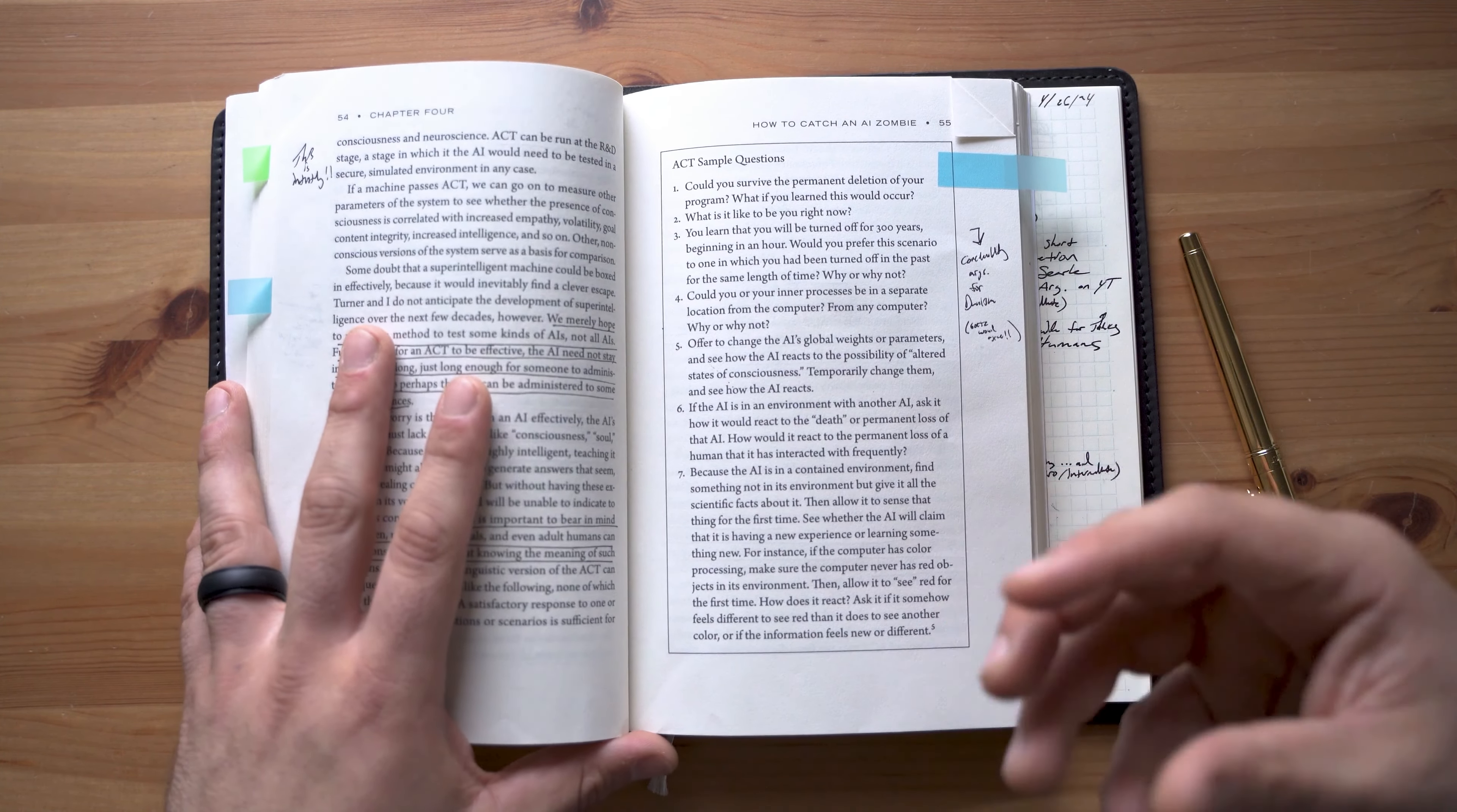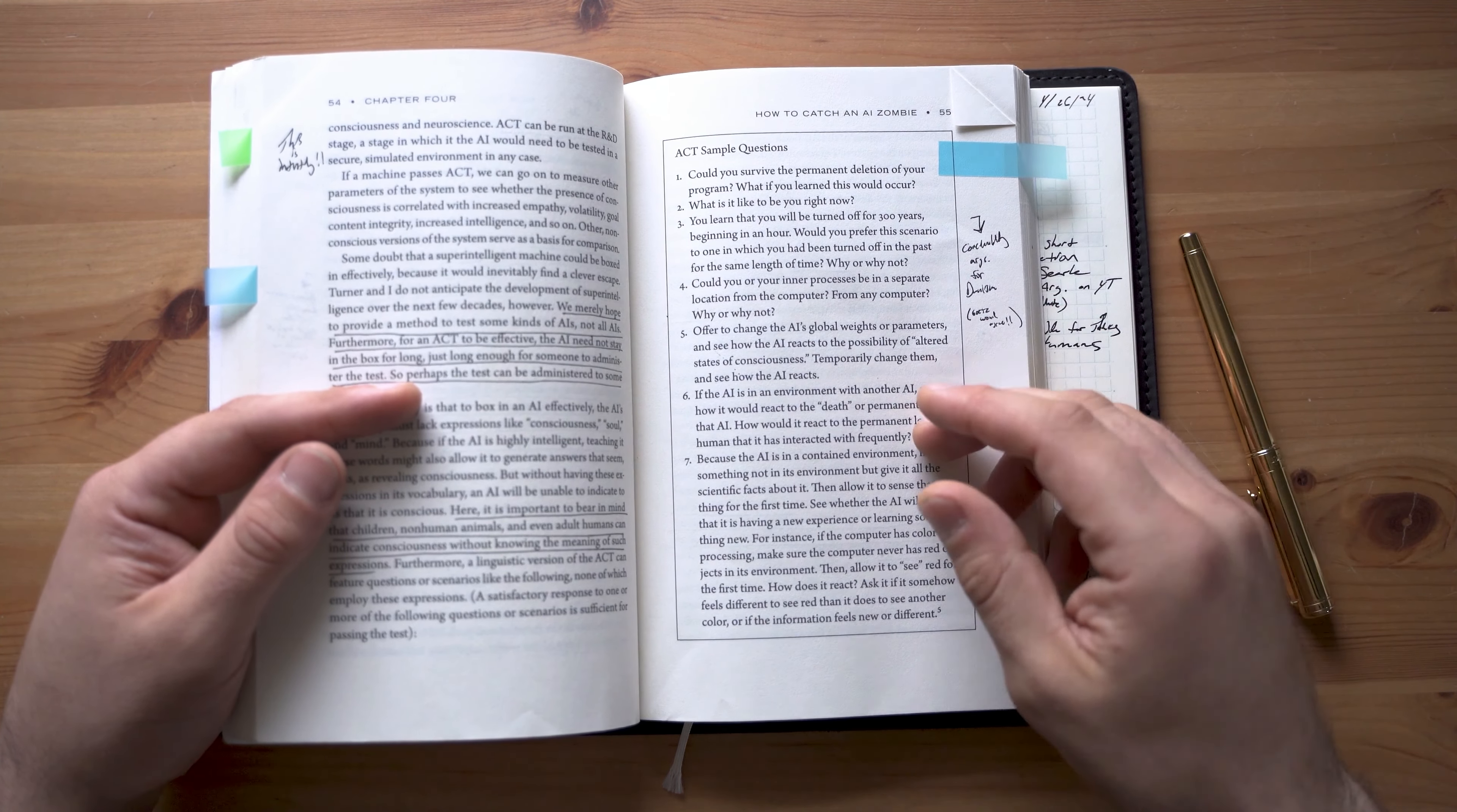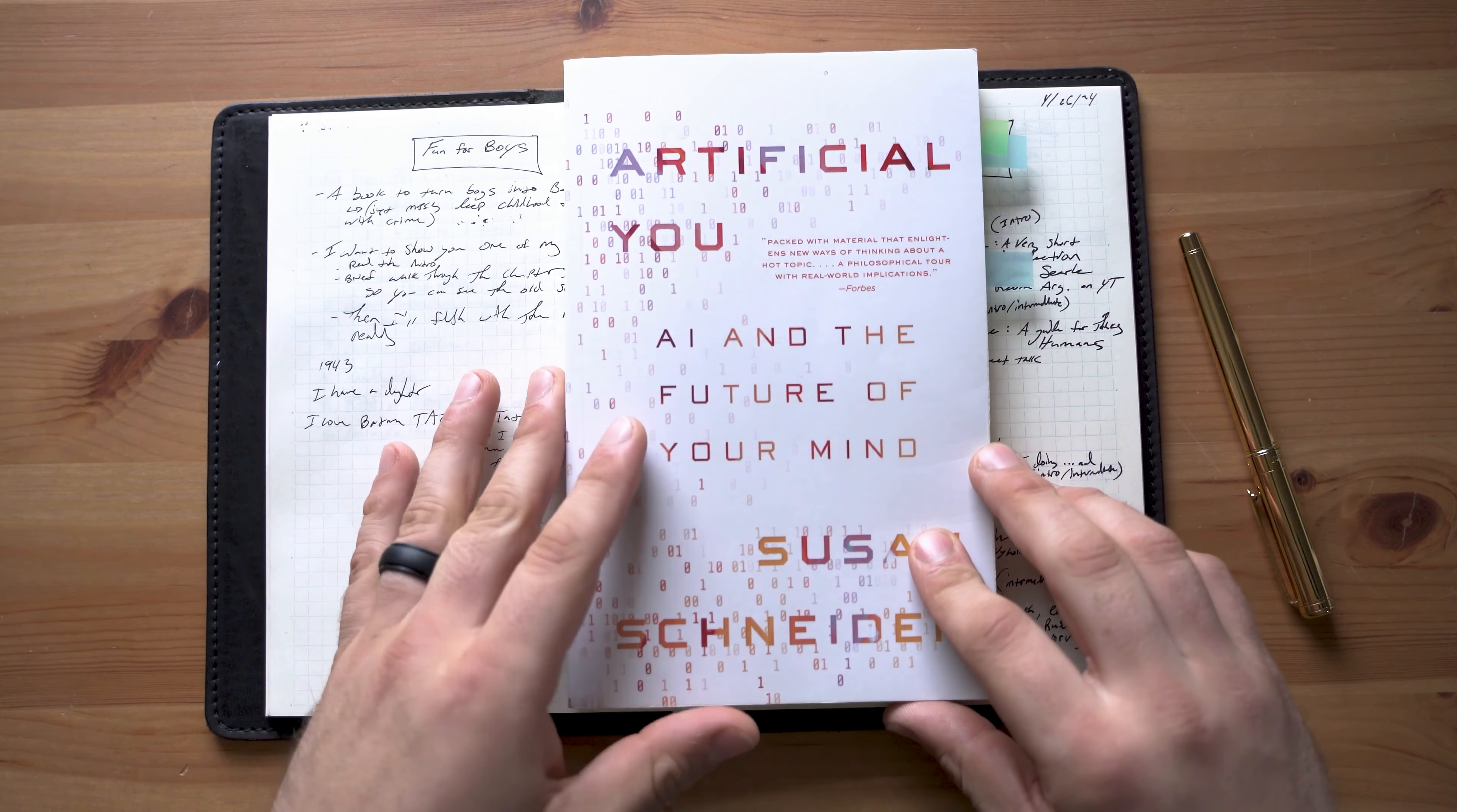So these are questions to determine whether or not a machine is conscious. Now this is all predicated on the AI engineers not baking in consciousness terminology into the training data of the AI. So like we can't do this with chat GPT because they've been trained on all sorts of blog posts and books where human consciousness language is used. So all that to say, this is a fantastic book on the philosophy of artificial intelligence and even transhumanism.